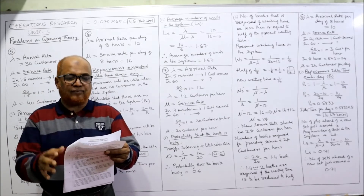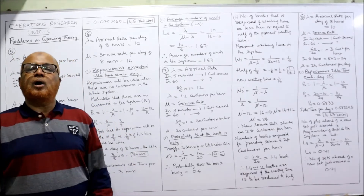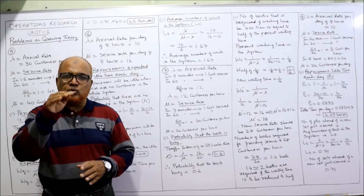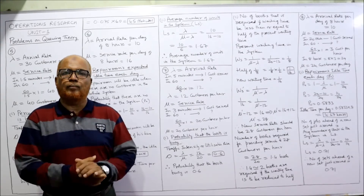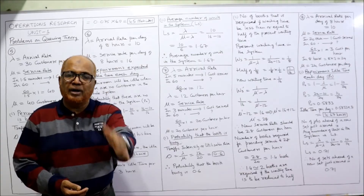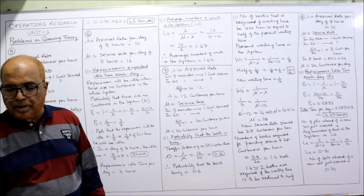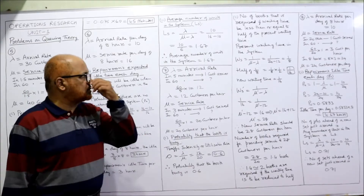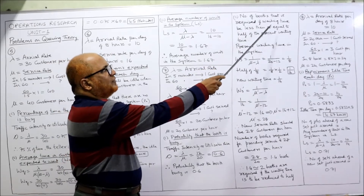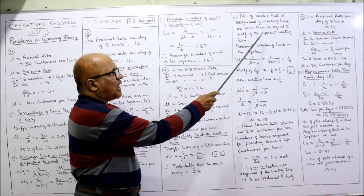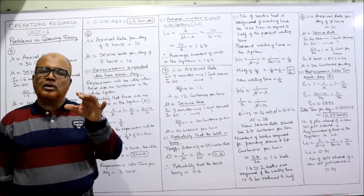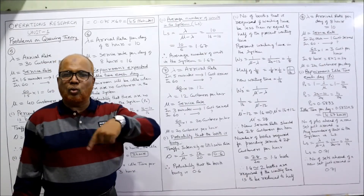Second question: how many more booths should be established to reduce the waiting time to less than or equal to half of the present waiting time? The booth owner wants the waiting time to become half of what it is now. First, we calculate the present waiting time of the customer in the whole system, which is Ws.